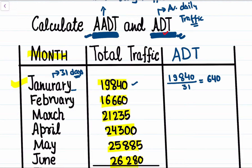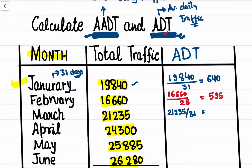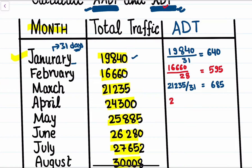Likewise, for February — since it is not mentioned that it was a leap year, we will consider February has 28 days. The traffic volume is 16,660, so we divide it by 28 and get the value 595. For March, 21,235 divided by 31 days gives us 685.